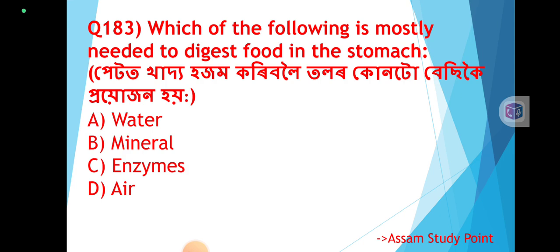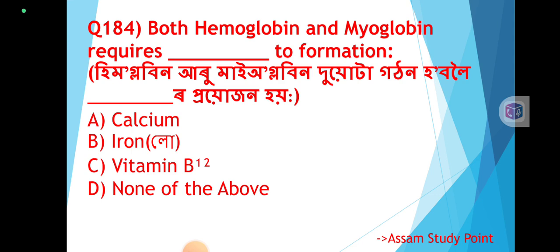Question 184: Pyatar khadda ajam kari bolo — what is the basic provision? The correct answer is Option A: Water (Paany). Next part of Q184: Both hemoglobin and myoglobin require iron for their formation. Hemoglobin and myoglobin — for both of these, iron provision is needed. The correct answer is Option B: Iron (Low).